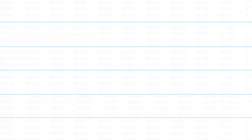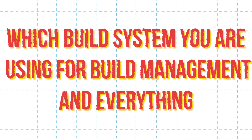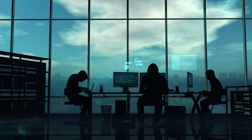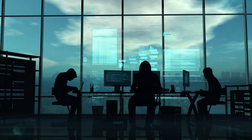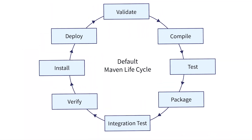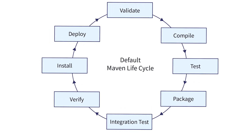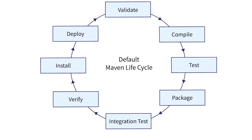The next important point is which build system you are using for build and dependency management. We are using Maven for that. Maven is used for build management and build automation, helping us install third-party dependencies like Selenium, TestNG, reports, logging, and everything else. Maven has a lifecycle which we use to install dependencies, run tests, and do cleanup.